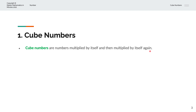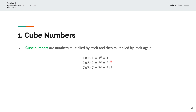Let's consider a couple of examples. We have the number 1. We'll multiply by itself, which is 1, and then multiply by itself again, which is 1. The notation for that is 1 to the power of 3, or 1 cubed, and that is equal to 1.